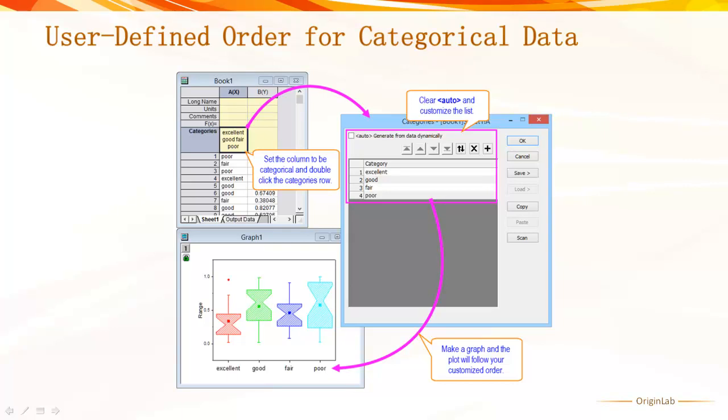Plus, it's very easy to copy or save a categorical order and apply it to other columns now.